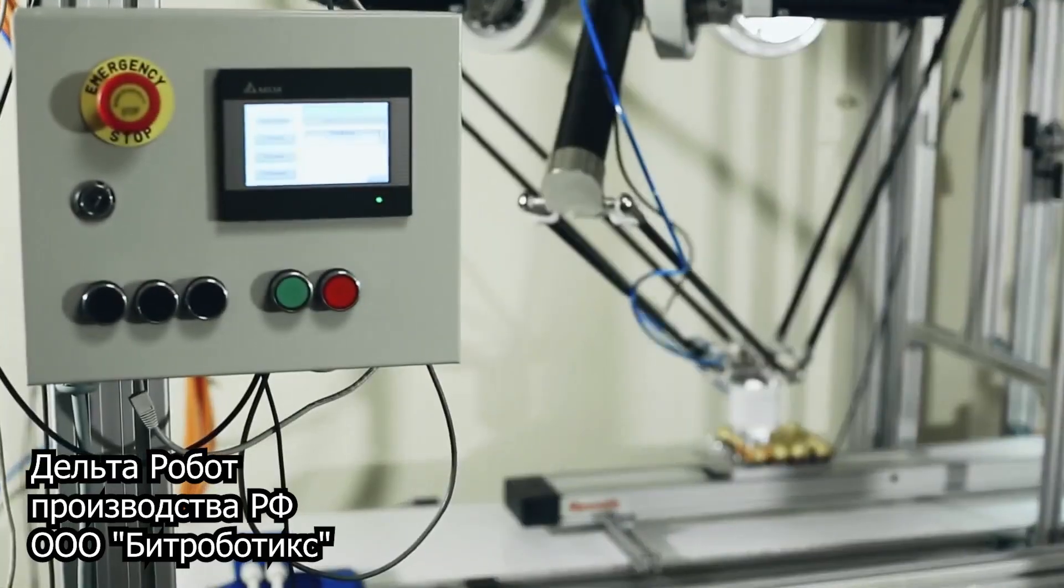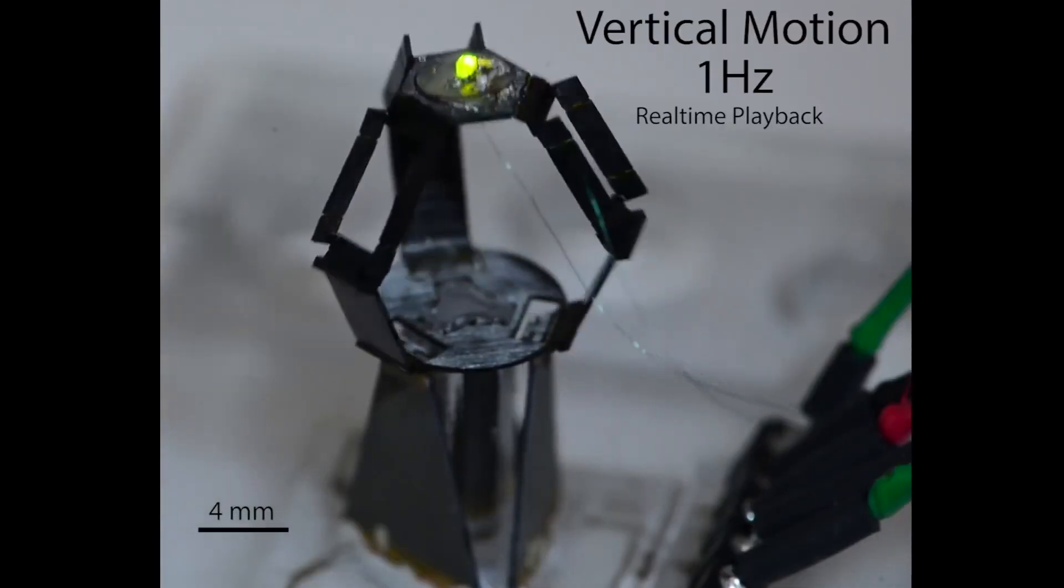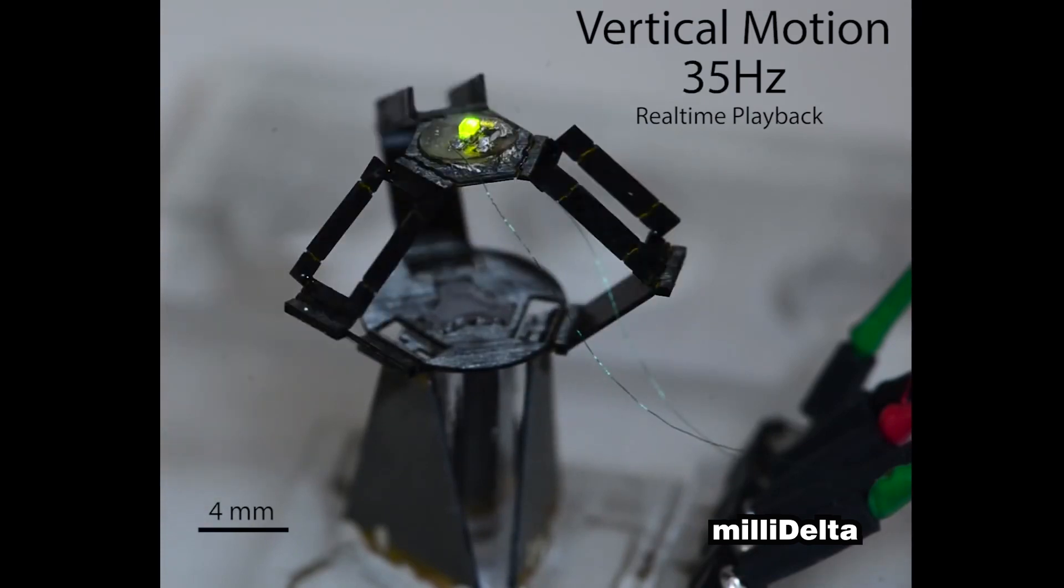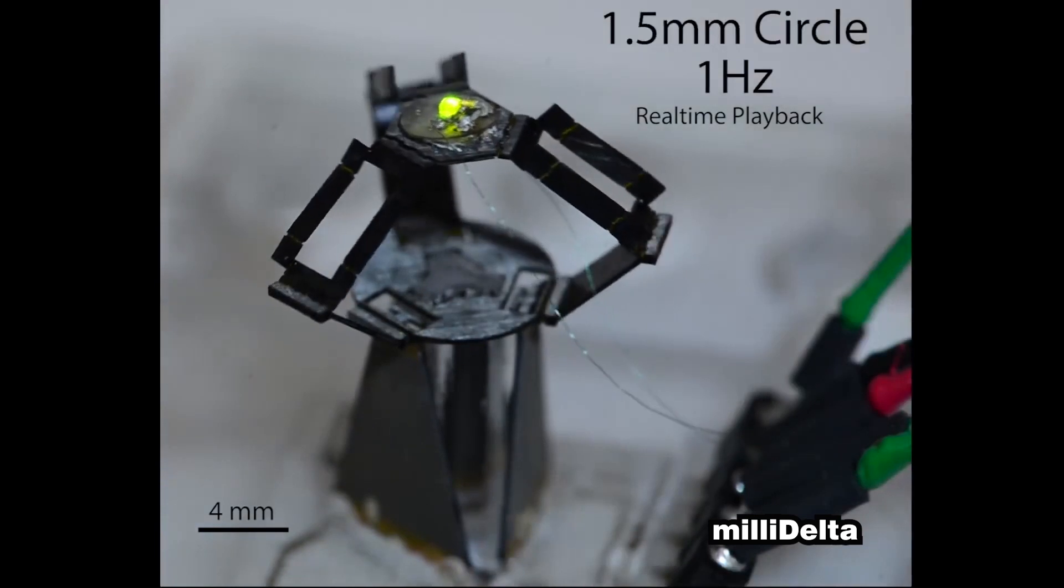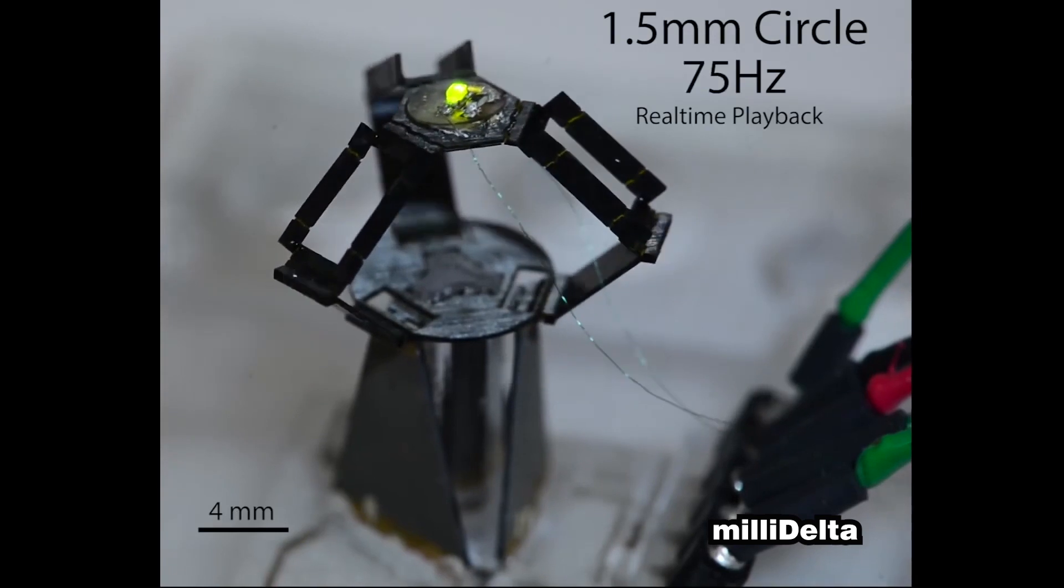The smallest representative was invented not so long ago. The robot is called Millie Delta and can perform up to 75 movements per second. The mini robot uses piezoelectric drives. The dimensions are 15 by 15 by 20 millimeters and the weight is only 430 milligrams.